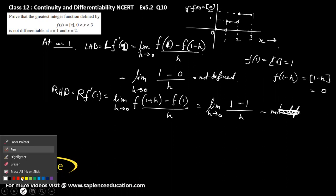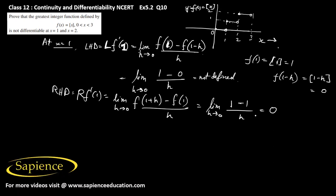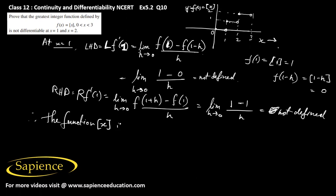So 0/h is also 0 by h. Since the left hand derivative is not defined, therefore the function [x] is not differentiable at x = 1.